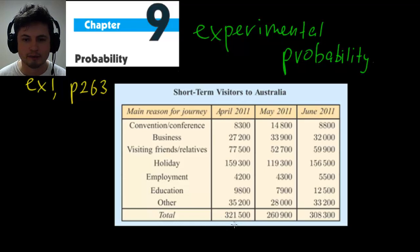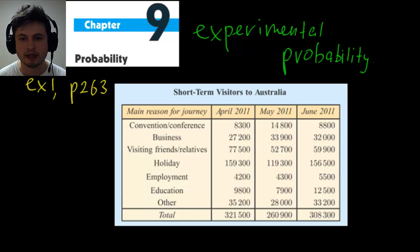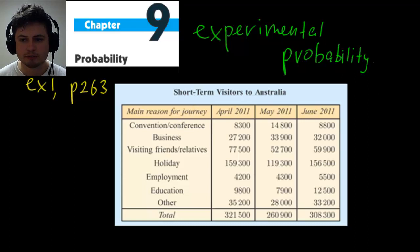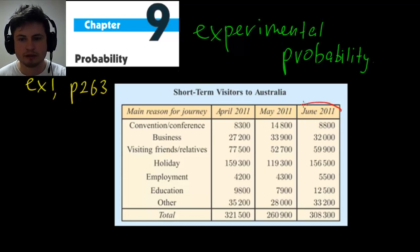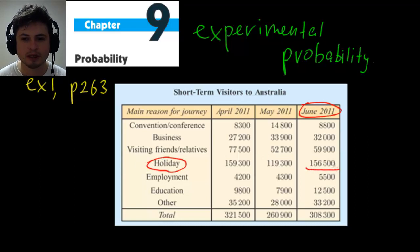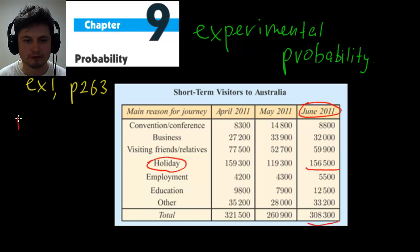There are totals for April, May, and June. The first question asks: what is the probability that a person visiting in June was in Australia for a holiday? Looking at the holiday row for June we find 156,500 people, which we divide by the total number of visitors in June, 308,300.